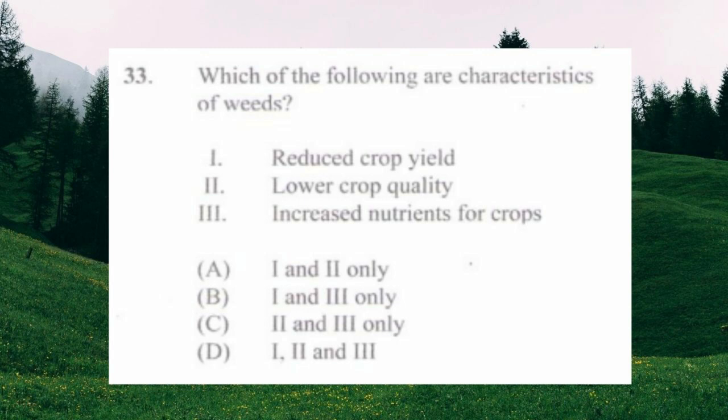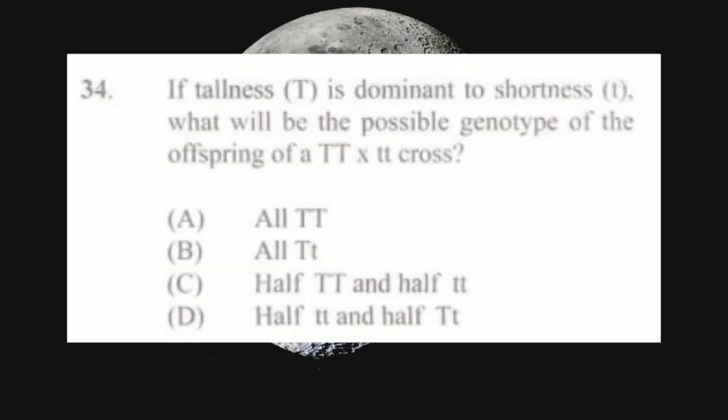Question number thirty-three: which of the following are characteristics of weeds? One) reduce crop yield, two) lower crop quality, three) increase nutrients for crops. The answer is a) one and two only.